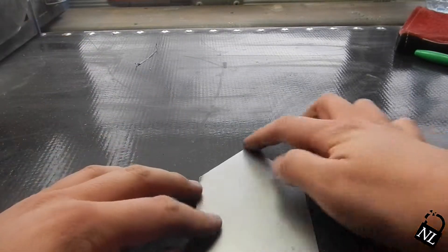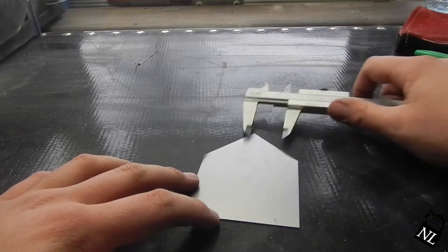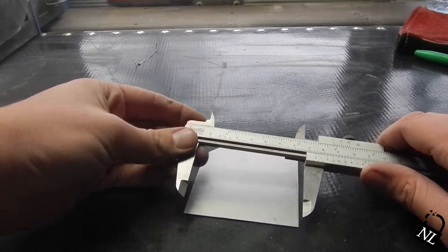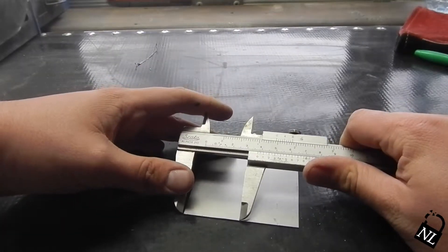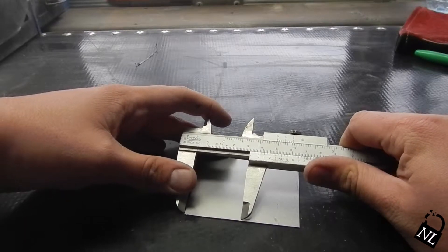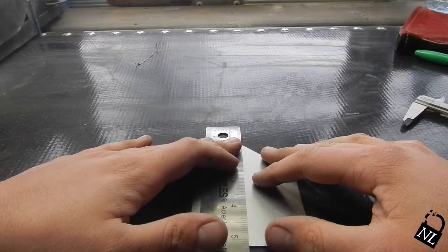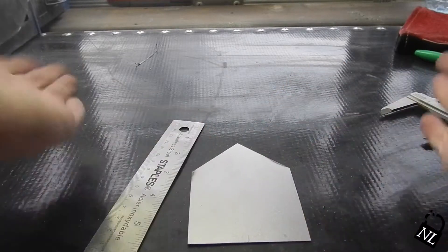Next we are going to mark where the folds are going to be. There's going to be a fold down the center. I just have to measure the bottom. Should be around 74, so 37. There's our line for where the center fold is going to be.